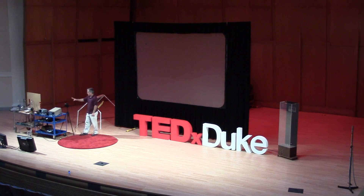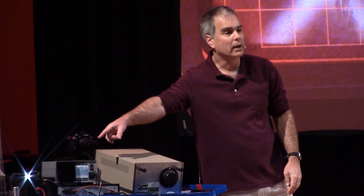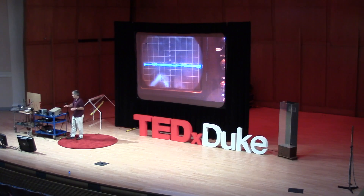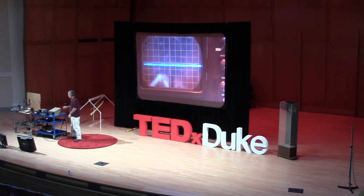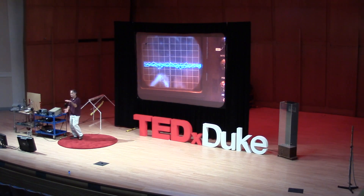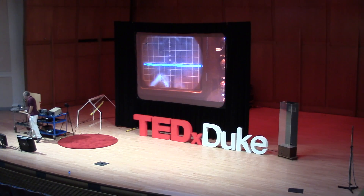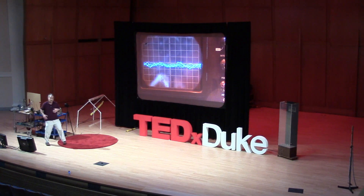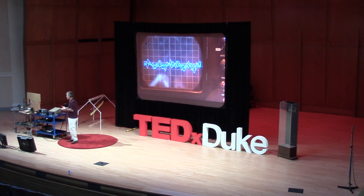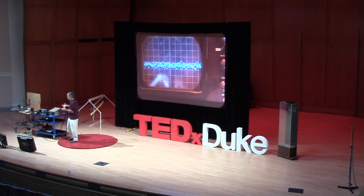Now let's get to the experiment. I brought in equipment to simulate the high note. I've got a function generator here, which just generates a waveform — a signal. In this case it's a sinusoid, a nice waveform just like I created with the spring. Then it goes through an amplifier, which increases the amplitude. Then finally, it comes out of this device which takes the electrical signal and converts it to a sound wave — you could call it an electrical wave to sound wave converter, or I prefer to call it a speaker.